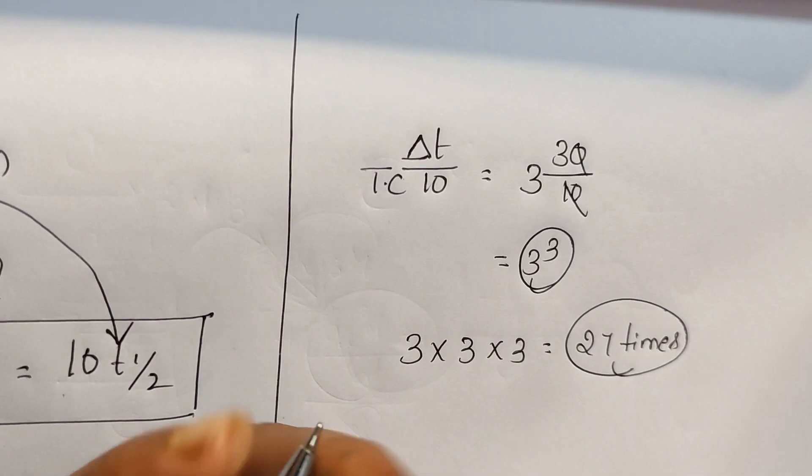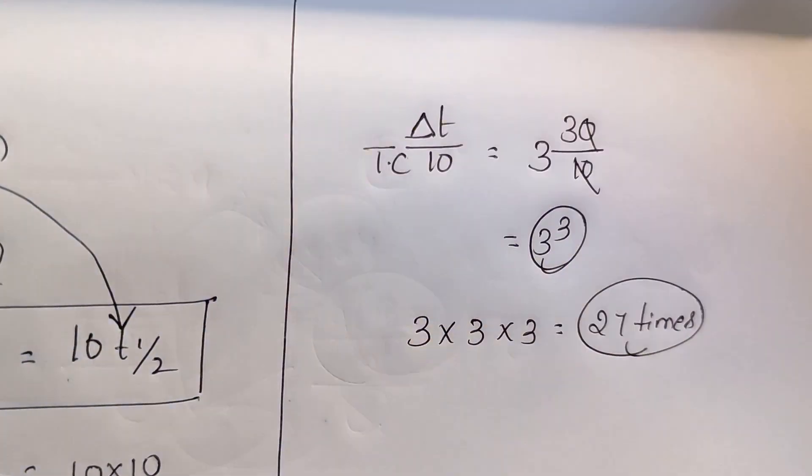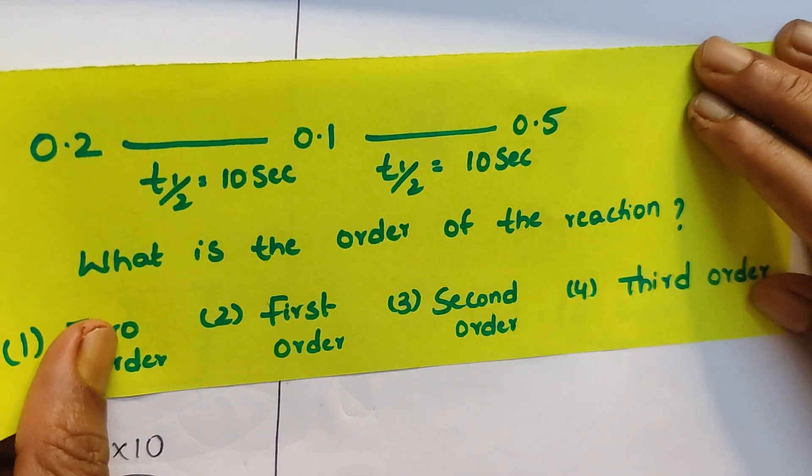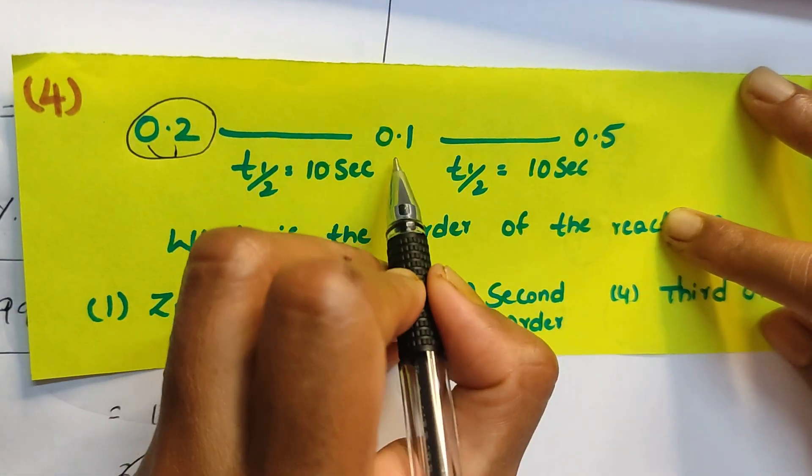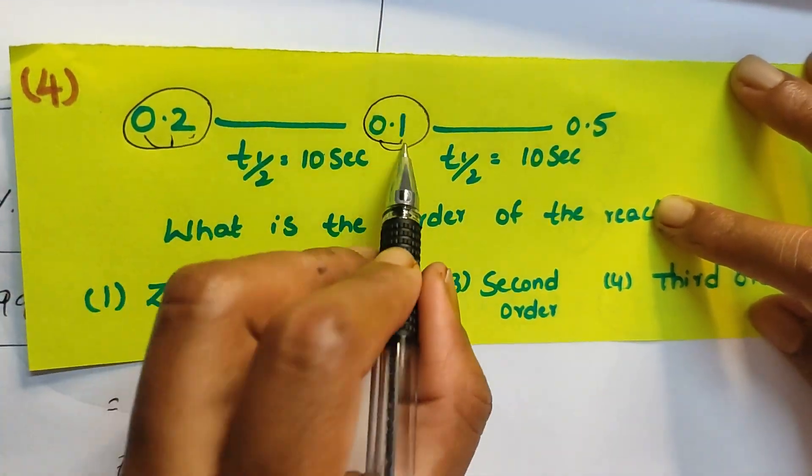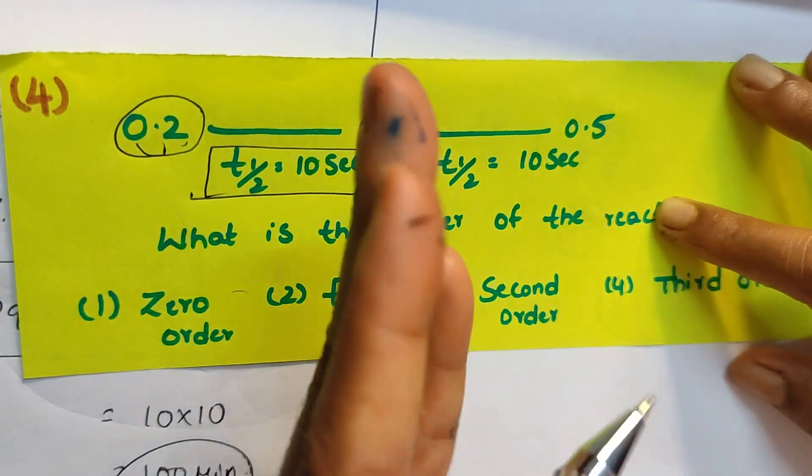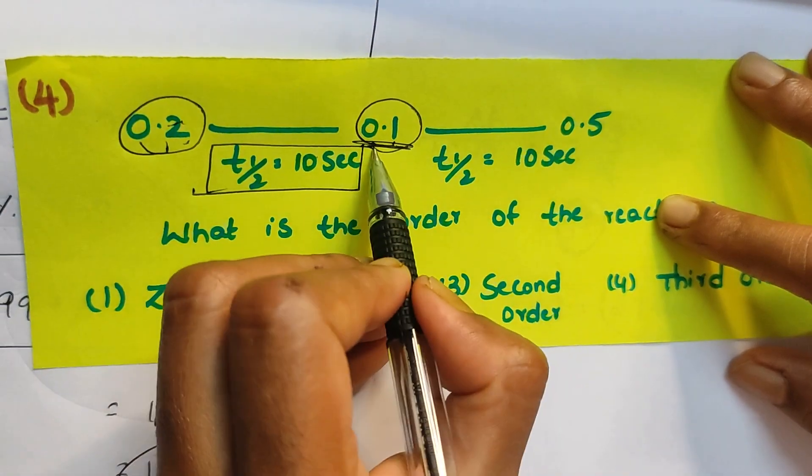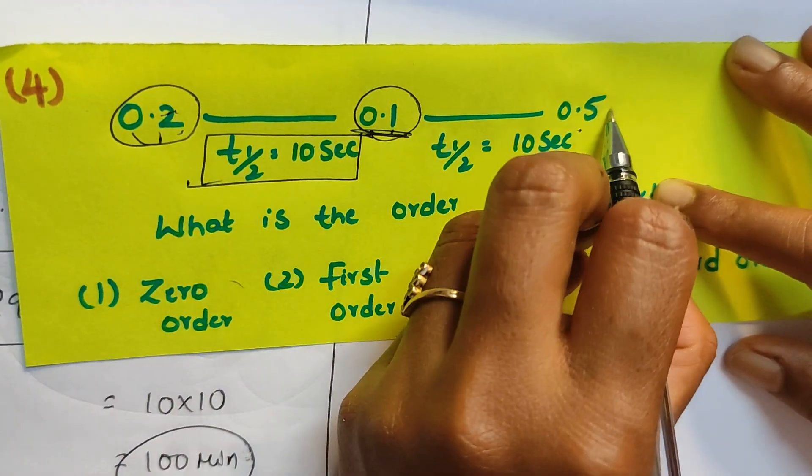Now question number 4. Coming to question number 4, they have given initial concentration 0.1 and final concentration 0.1, that time t half is 10 seconds. Now the initial concentration is changing to 0.1, so they're asking what is the order of the reaction.